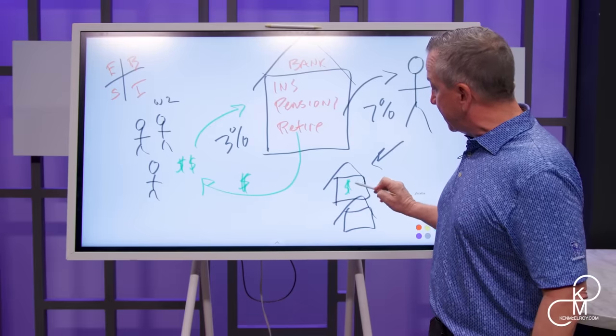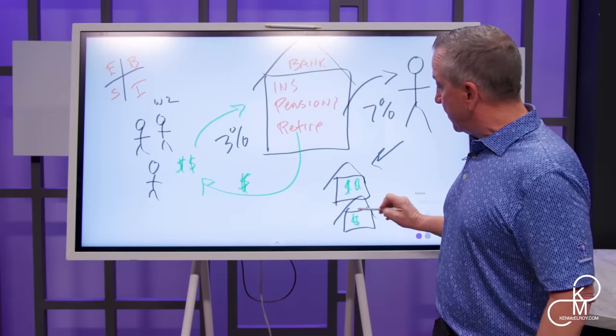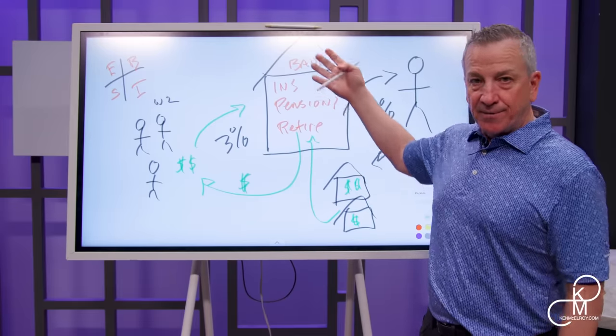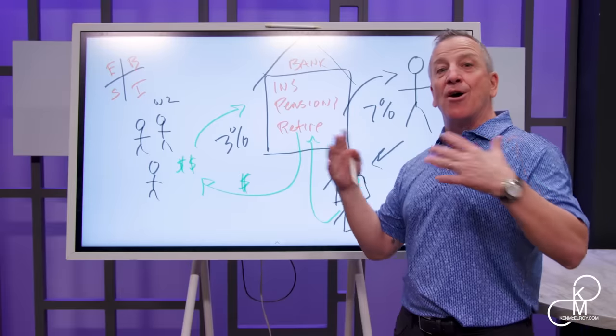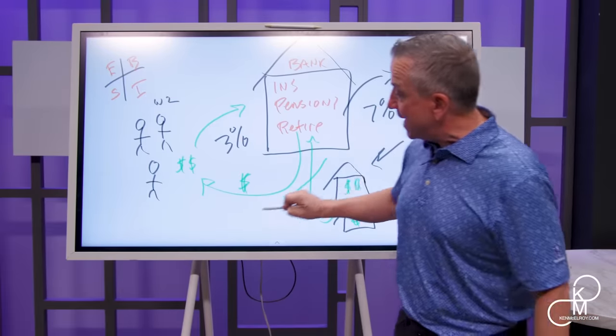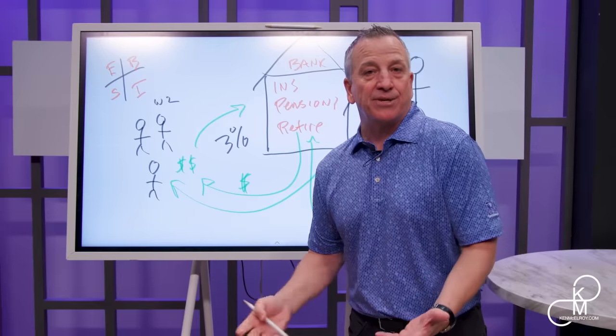These assets here pay the insurance, the pensions, the retirement accounts, and of course the bank. The bank takes all their fees, the insurance company takes their fees, and then that actually makes it back over to Main Street.